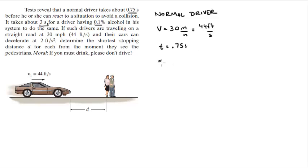That is given by the velocity times the time. The velocity is 44 feet per second times 0.75 seconds, so that means that 33 feet elapsed before the normal driver starts reacting.